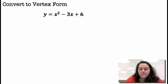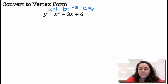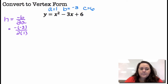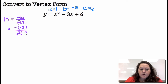Convert to vertex form: X² minus 3X plus 6. A is 1, B is negative 3, C is 6. I'm going to find the vertex — find the X piece, H, which is negative B over 2A. That's negative negative 3 over 2 times 1. Negative negative 3 becomes positive 3, so H is 3 halves.